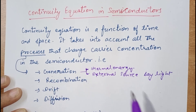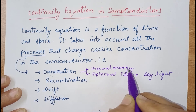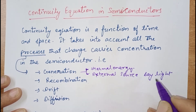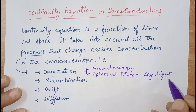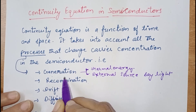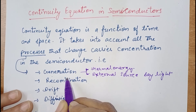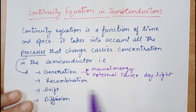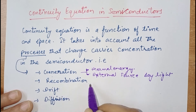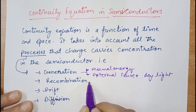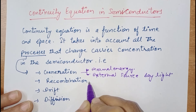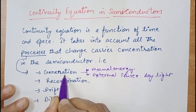Generation can be of two types: one is due to thermal energy, and the other is due to an external source such as the application of light. Generation and recombination affect the concentration of charge carriers. In recombination, within a particular volume of semiconductor, the concentration of charge carriers decreases, while generation increases it.